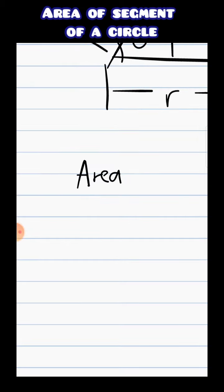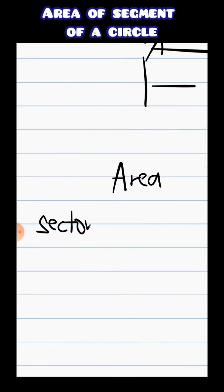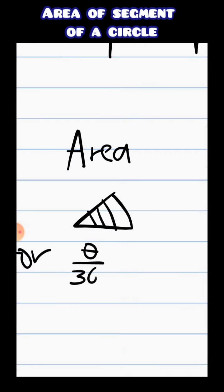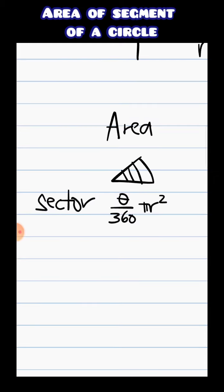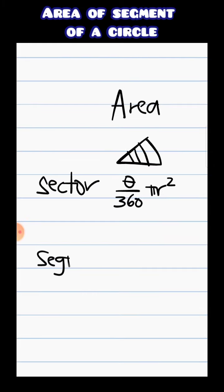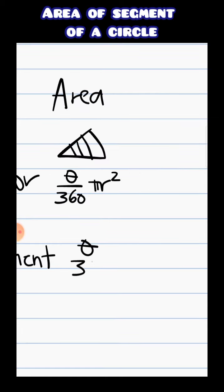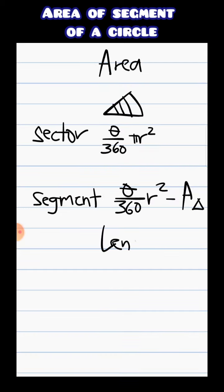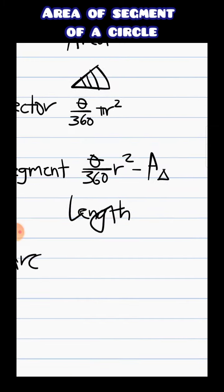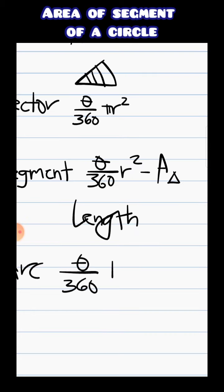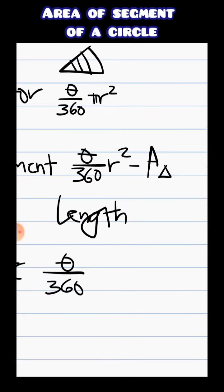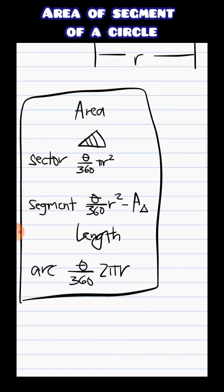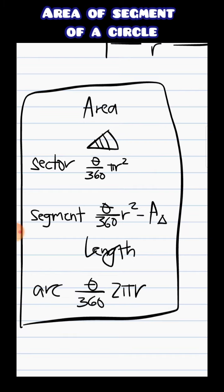That's it for this video, guys. In summary: the area of a sector — think of it like a pizza slice — is theta/360 times πr². For a segment, it's theta/360 times πr² minus the area of the triangle. And the length of an arc is the angle over 360 times 2πr, which is the circumference of the entire circle. Hope you learned something — subscribe, and talk to you in the next one. Peace out.